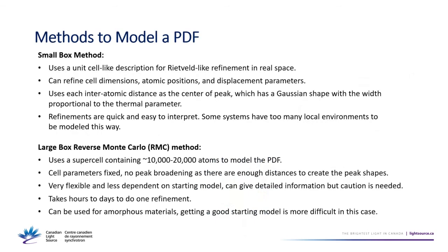There are two basic ways to model a PDF. The small box method uses a unit-cell description — basically a Rietveld refinement done in real space rather than reciprocal space. You have atomic positions, displacement parameters, and a thermal parameter that creates a Gaussian around each peak position. It's quick and easy to interpret, but limited to systems with reasonable periodic order. The reverse Monte Carlo method uses giant supercells, takes longer, but can handle more complex disordered systems. GSAS-II can generate input files for the RMC method.